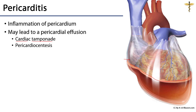If there is a significant volume of fluid accumulation within the pericardium, that can lead to cardiac tamponade. With cardiac tamponade, the increase of fluid exerts pressure on the heart such that it cannot expand during diastole, and if the heart cannot expand during diastole, the movement of blood into the heart is compromised.